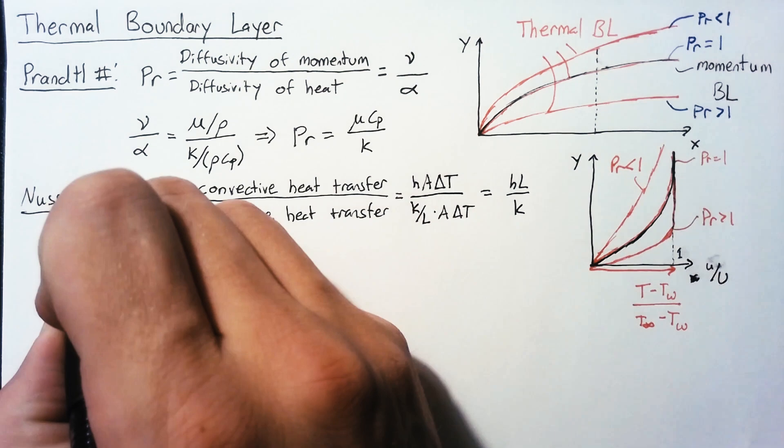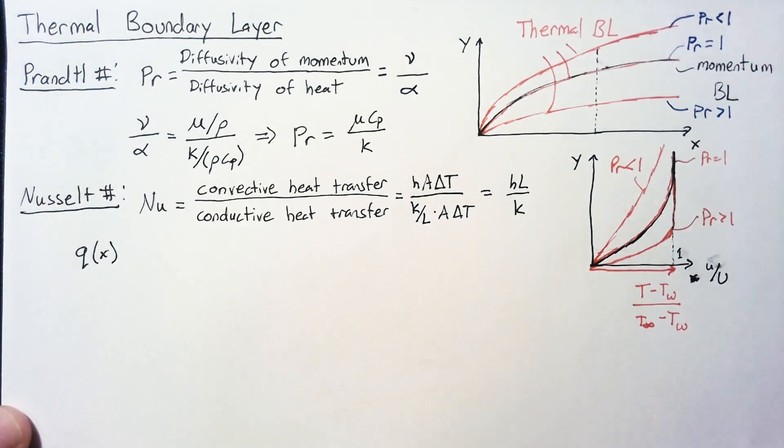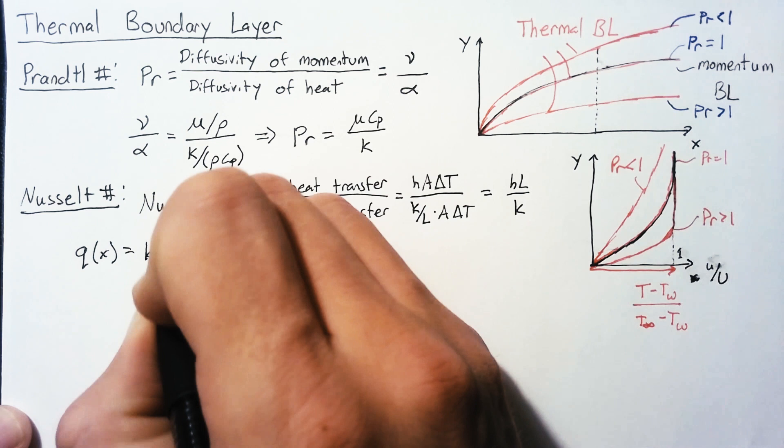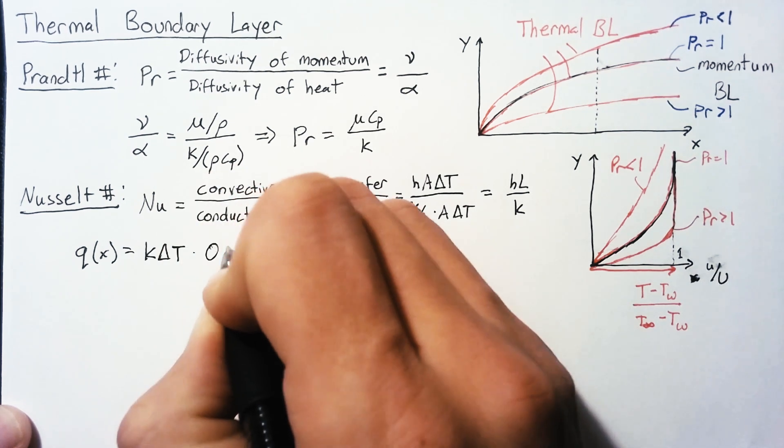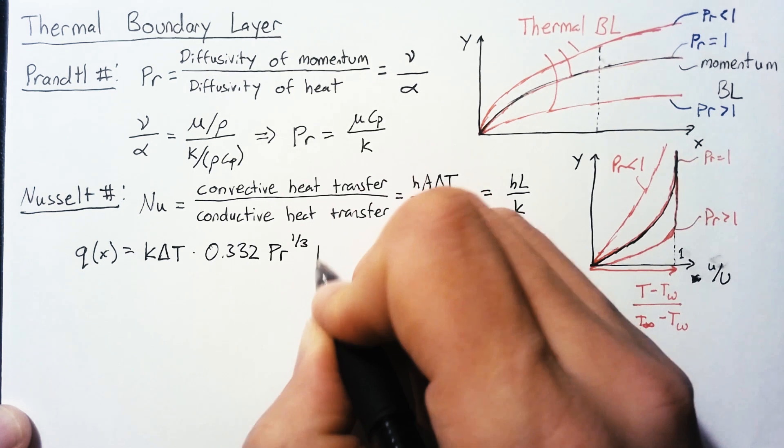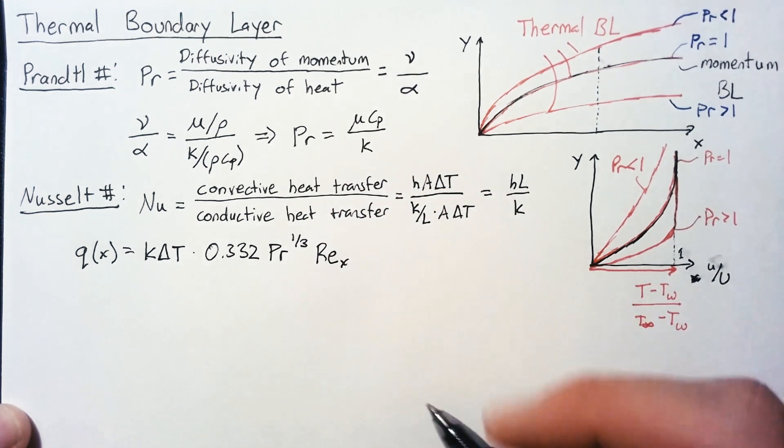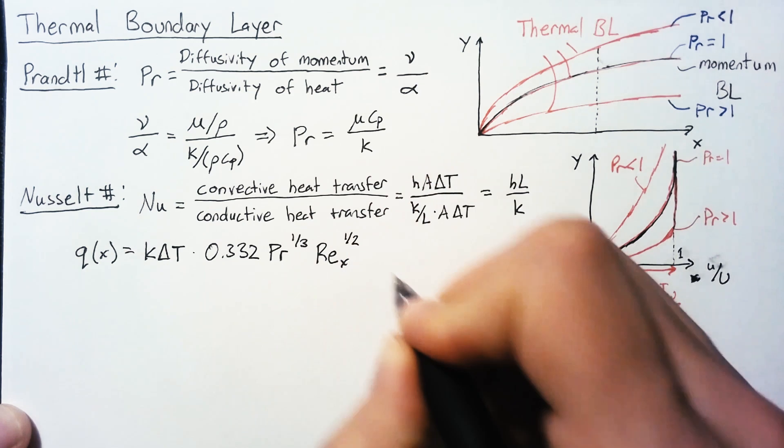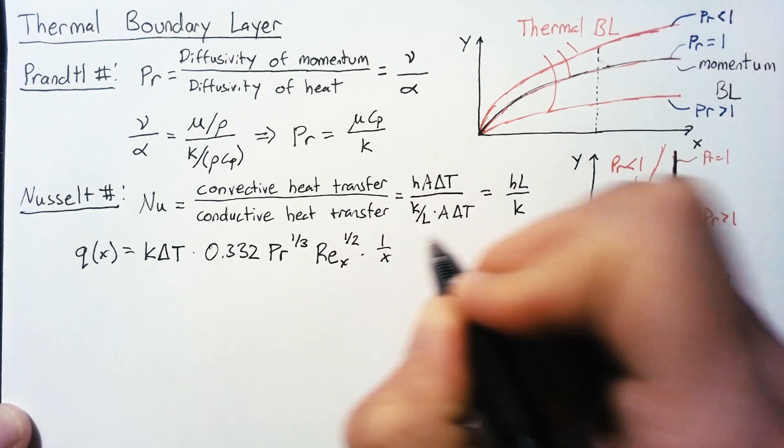Our heat flux, lowercase q, is going to be equal to K times delta T times 0.332 times the Prandtl number, times the Reynolds number based off of X to the 1 half, multiplied by 1 over X.